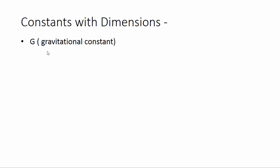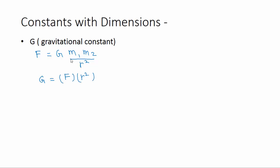To find the dimension of gravitational constant G, we use the formula: gravitational force F = G·m₁·m₂ / r². Rearranging to find G: G = F·r² / (m₁·m₂). So r² goes to the numerator and m₁m₂ goes to the denominator.